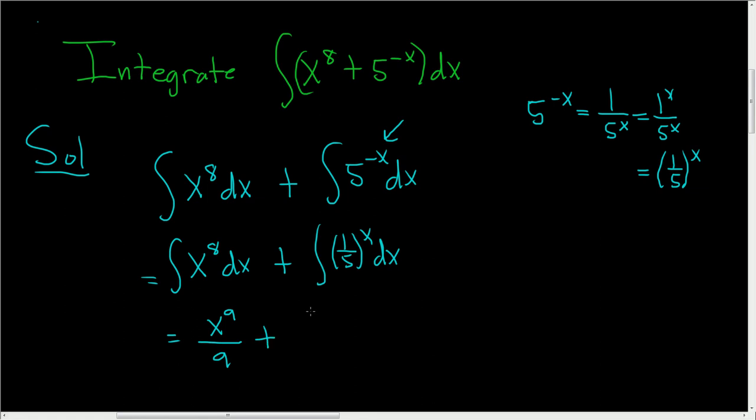And then here the formula tells us that this is 1 fifth to the x over the natural log of 1 fifth. And then we just add our constant.